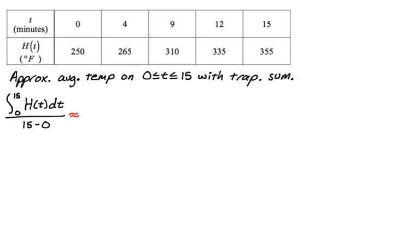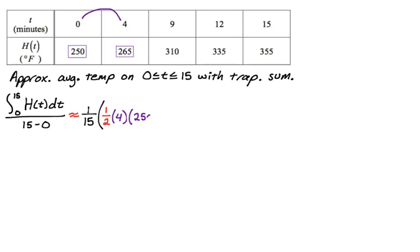I'm going to pull out a one over 15 — which is by far the most common thing people forget. They just approximate the definite integral and forget the actual problem they're solving. Now using trapezoids: the area of a trapezoid is one half the height times the sum of the bases. So the first height — the width from zero to four — is four: one half times four, times the sum of 250 and 265. That's our first trapezoid.